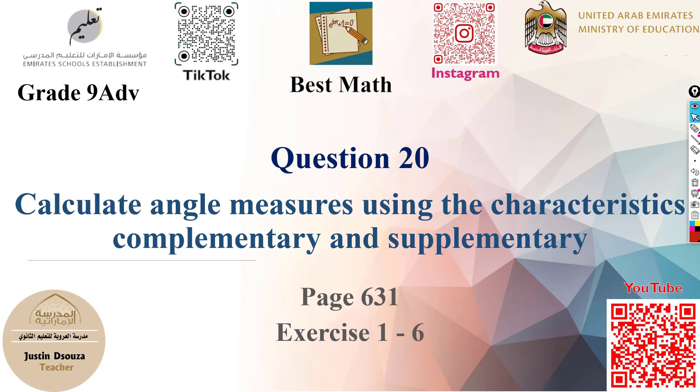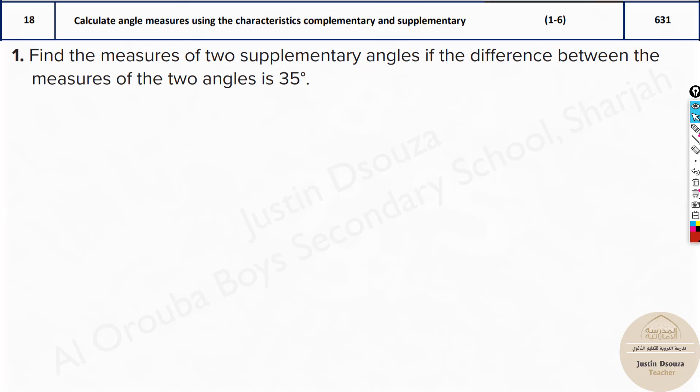Question 20 is to calculate the measure of angles for which the angles are supplementary or complementary. Let's read the question: find the measure of two supplementary angles if the difference between the measures of the two angles is 35 degrees.